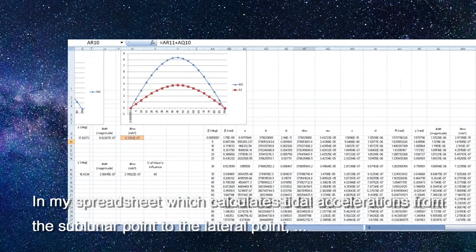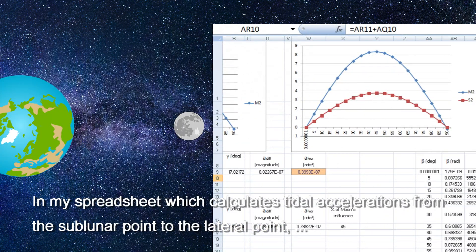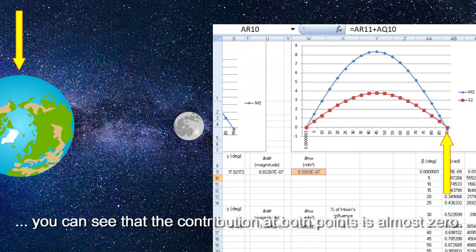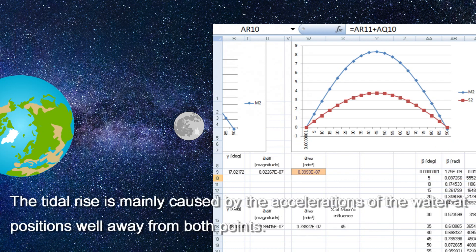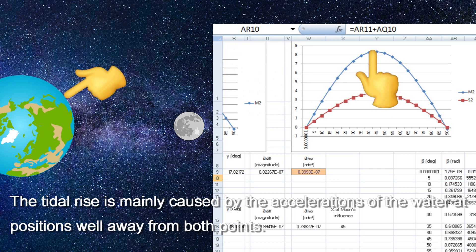In my spreadsheet, which calculates tidal accelerations, from the sublunar point to the lateral point, you can see that the contribution at both points is almost zero. The tidal rise is mainly caused by the accelerations of the water at positions well away from both points.